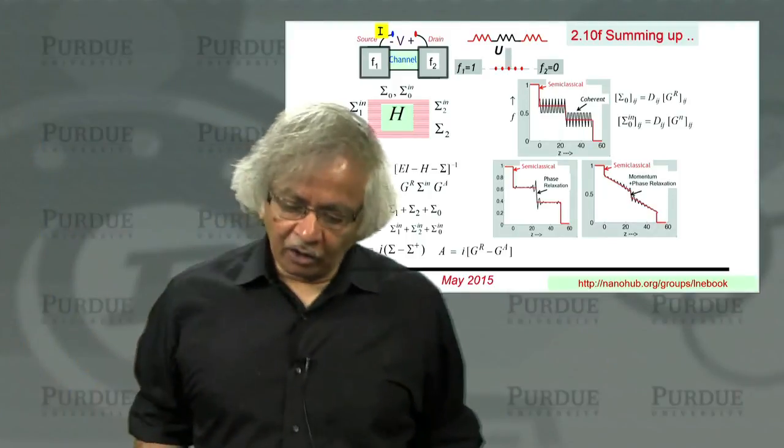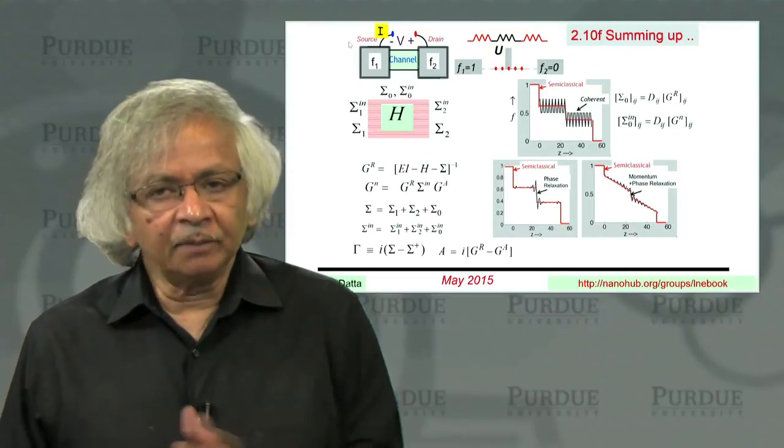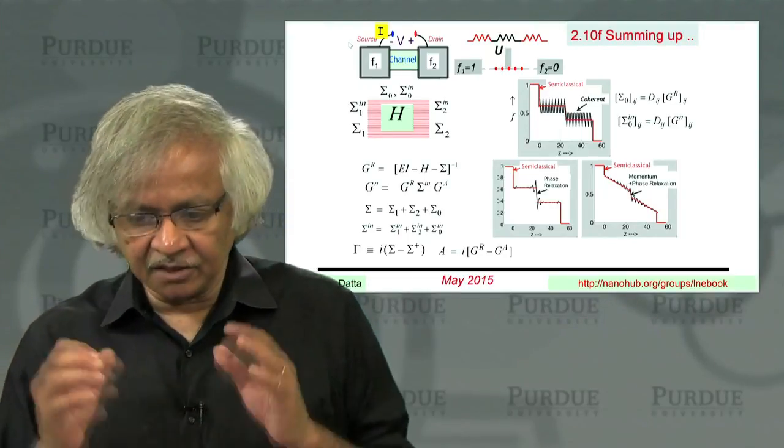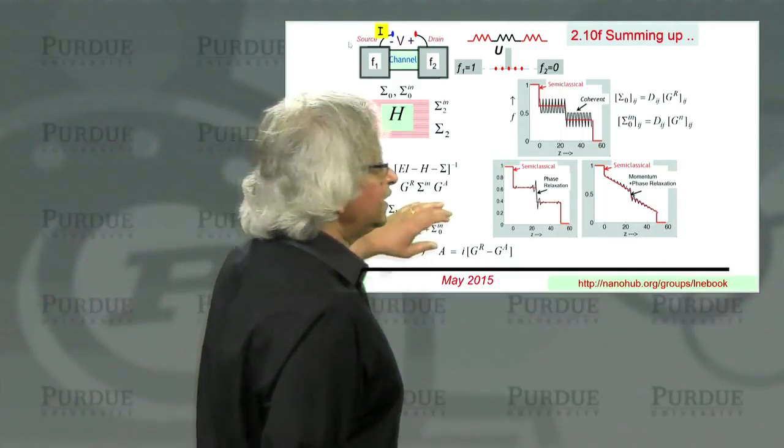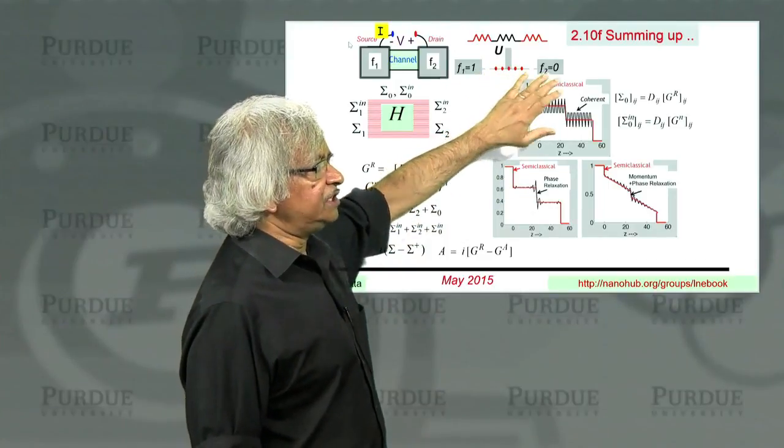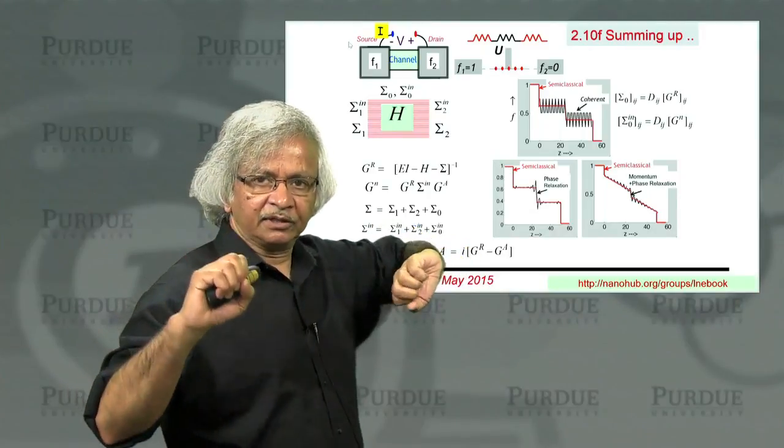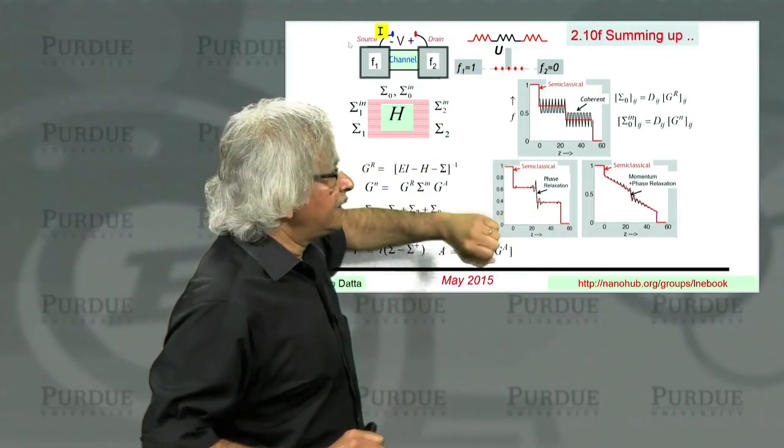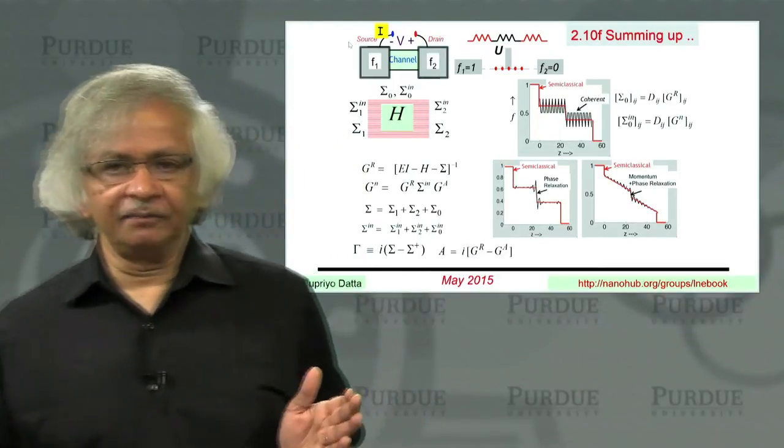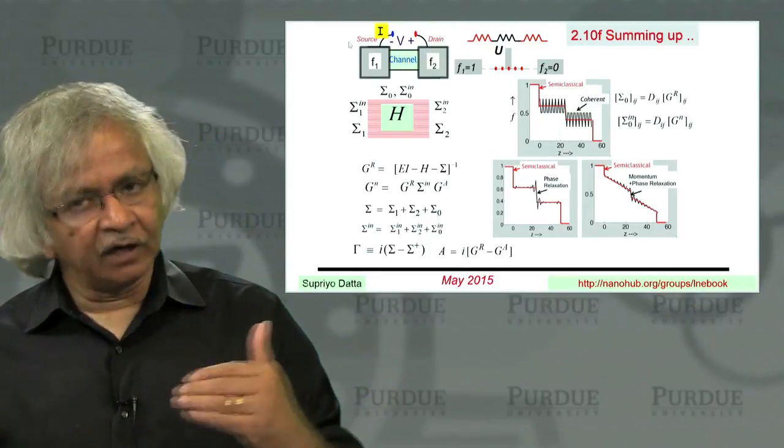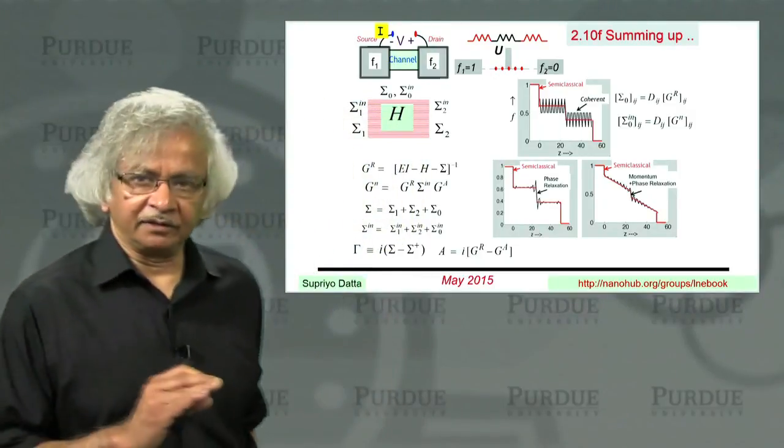Usually the approach is that you treat the D as something to be obtained from microscopic theory. Because basically what the D represents is the RMS potential. There is this random potential inside your channel, and what the dij represents is the correlation between the potential at point i with the potential at point j. Ordinarily you might start from a microscopic theory of the scattering mechanism, like phonons, and try to figure out what that correlation is.